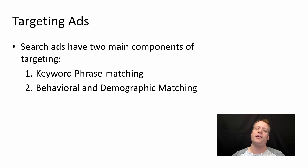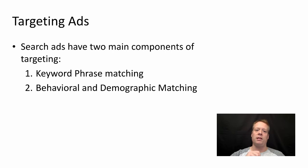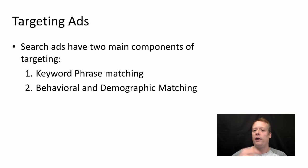You can also specify behavioral and demographic components as well. You can tell Google that you only want to look at people in a certain region or area. To some extent, it has some notion of actual demographics like male, female. You can try and target groups — individuals who are in those groups at a higher level.